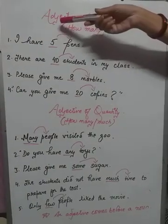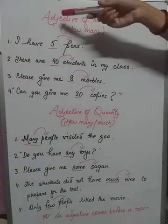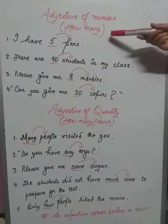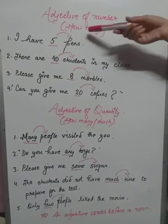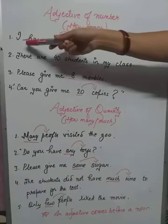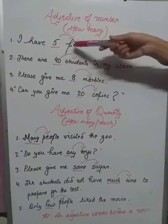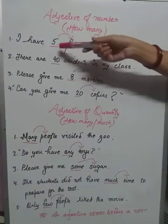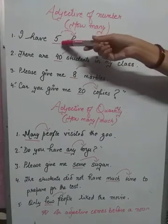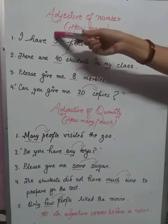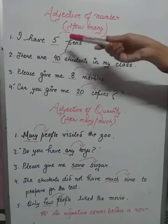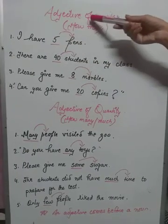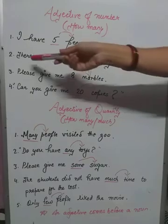Now let us go to adjectives of number — means how many, how many noun. I have five pens. Here the number is given. How many pens? Five pens. Here the direct number is given. When the direct number is given, it is called adjective of number.